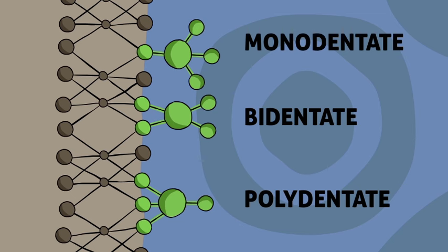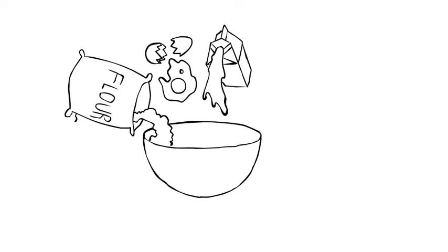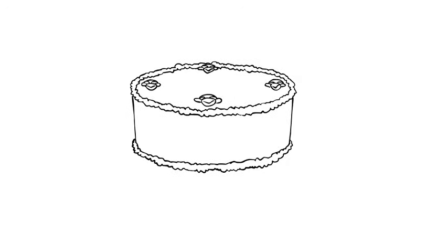And in chemisorption, you don't even need a charged surface. It's like baking a cake. You start out with flour, eggs, milk, and sugar, but once you bake it, you can't separate the ingredients.